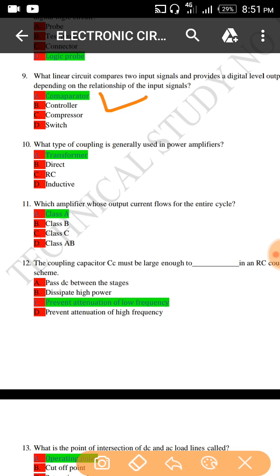What type of coupling is generally used in power amplifiers? Power amplifier basically transformer coupling, option A is the right answer.